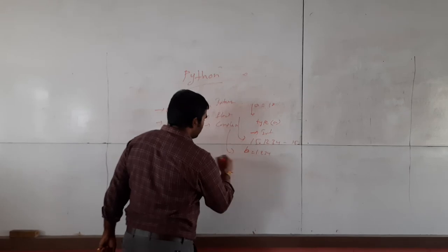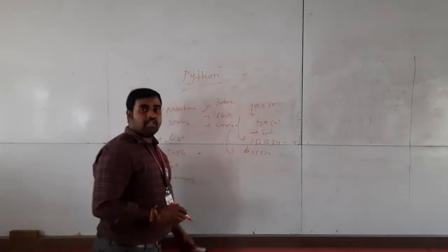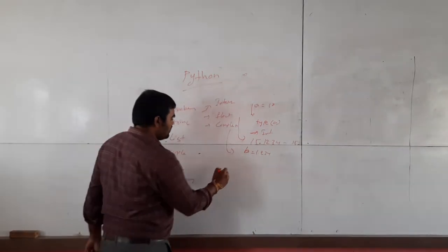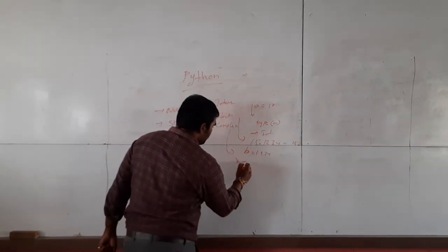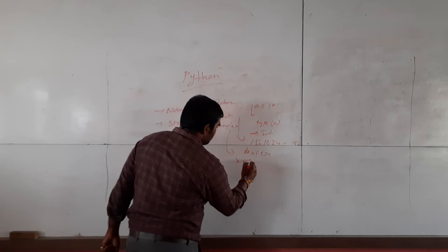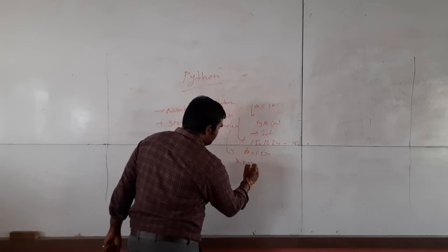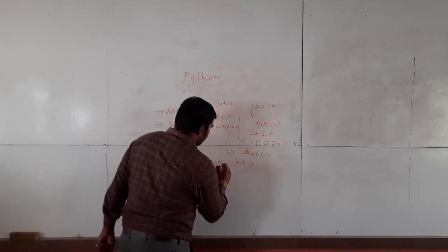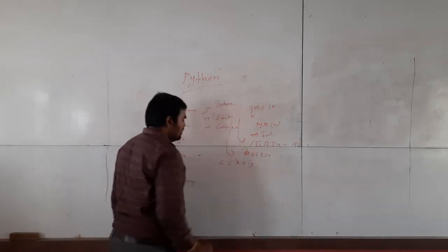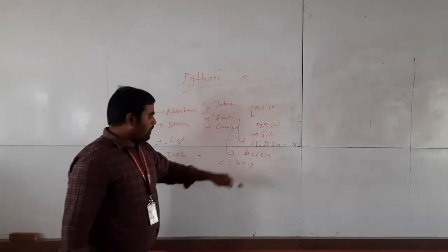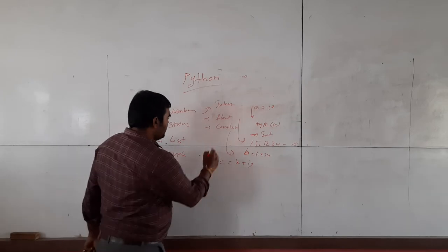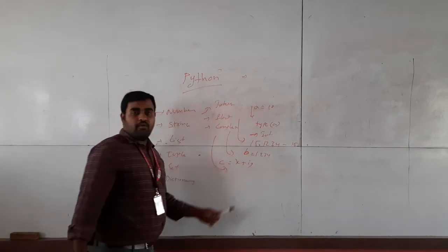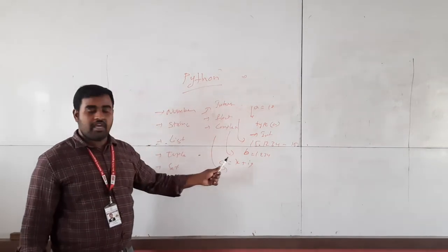Next one is the complex data type. Complex means it is in the form of x + iy. This is called the complex value.